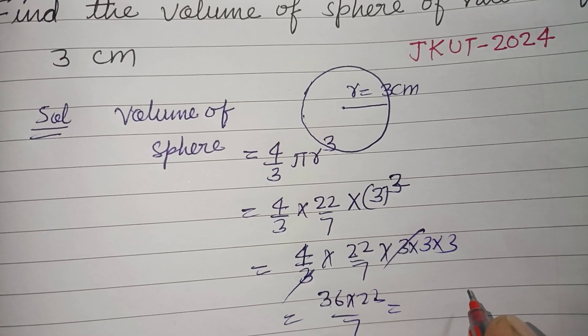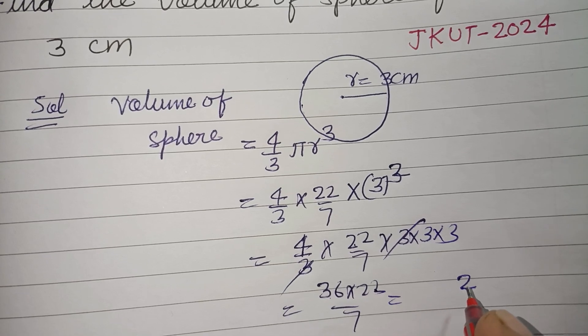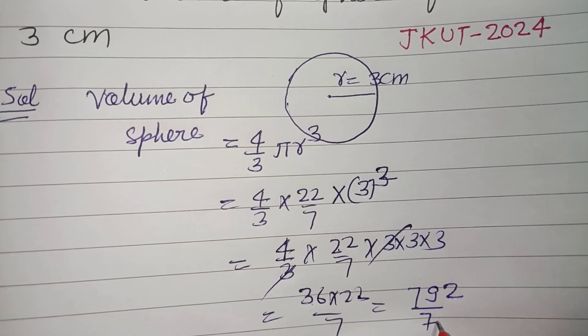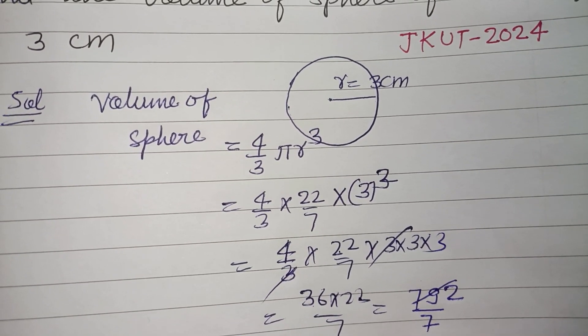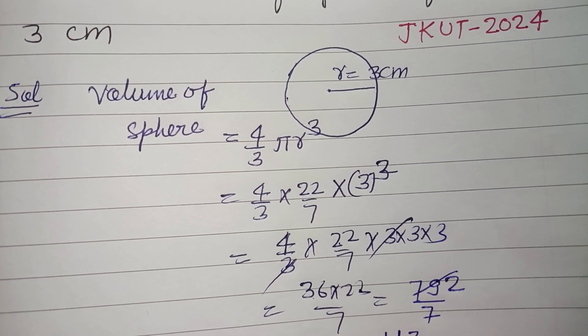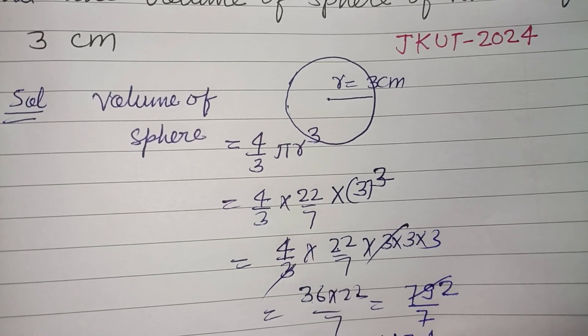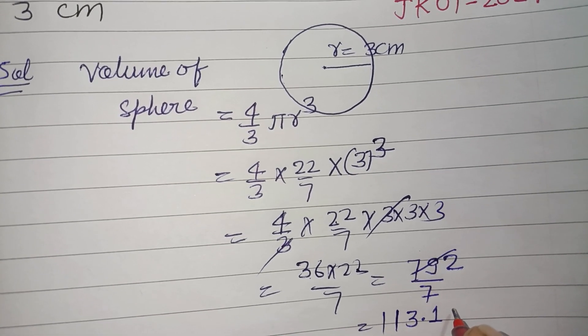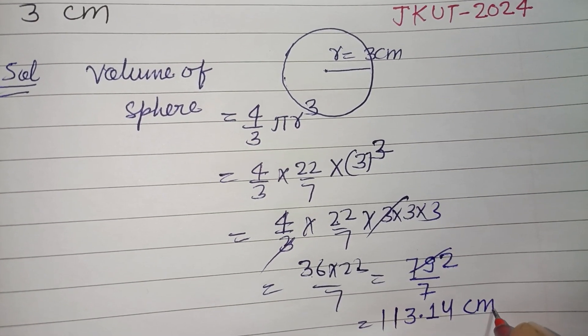36 into 2 is 72, 7 goes into 72... 7 times 10 is 70, remainder 2. Bring down... 7 goes into 21 three times. 7 goes into 14 twice, remainder 0. 7 times 4 is 28. So this is cubic centimeters.